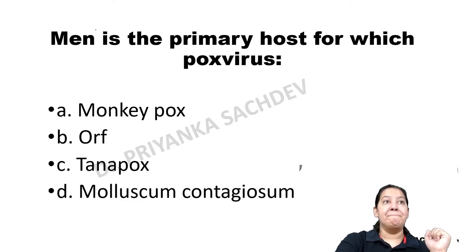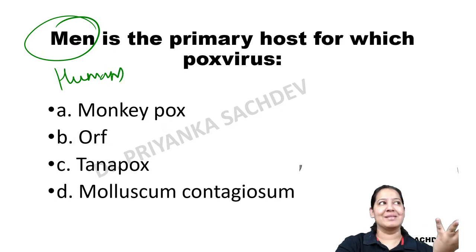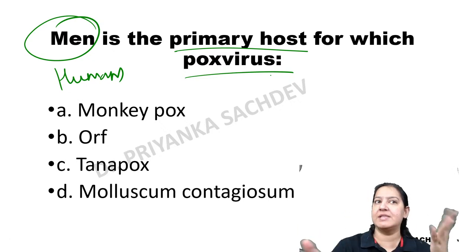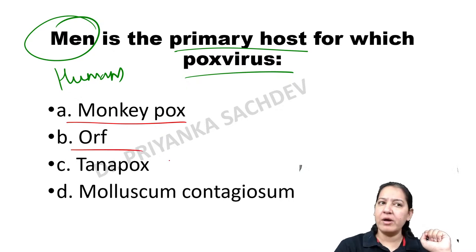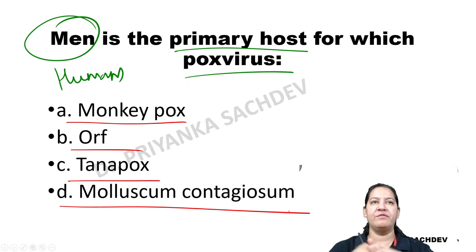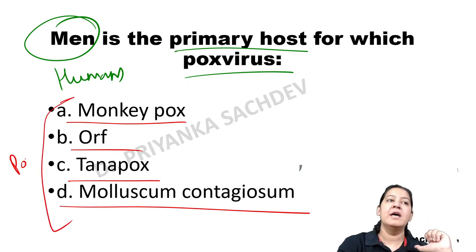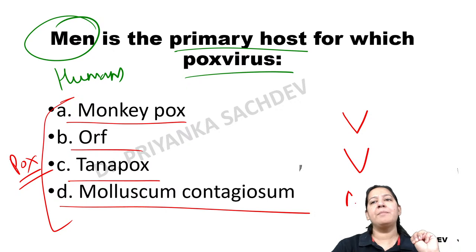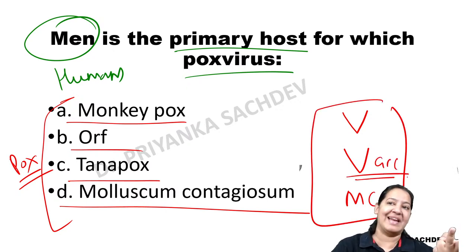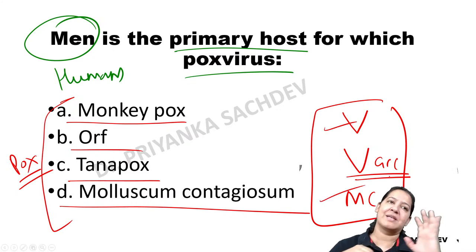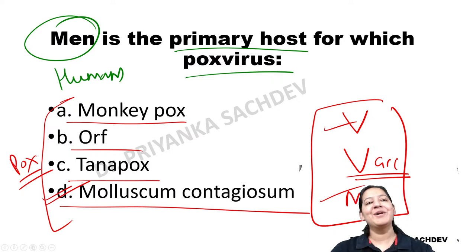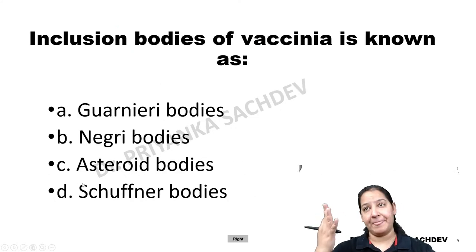MCQ: Man is the primary host of which of the following pox viruses? Options: monkeypox, ORF, tanapox, molluscum contagiosum. Only three pox viruses cause disease in humans: variola, vaccinia, and molluscum contagiosum. Since variola is eradicated and vaccinia is artificial and used for vaccines, out of the given options the correct answer is molluscum contagiosum — option D.